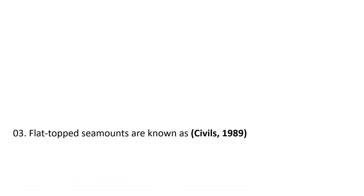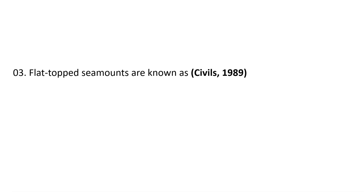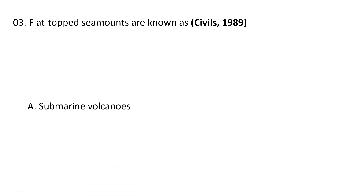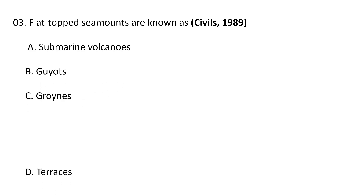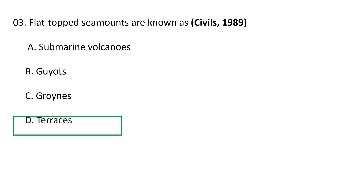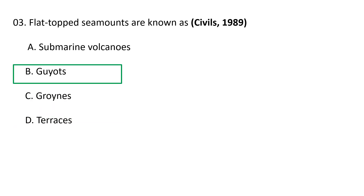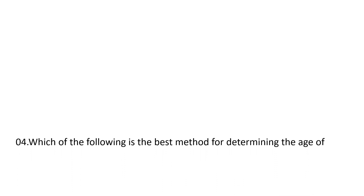Next question: Flat-topped sea mounts are known as — A) submarine volcanoes, B) guyots, C) groynes, and D) terraces. The correct answer is B, guyots. Groynes are shore protection structures built perpendicular to the shoreline, while terraces are a geomorphic feature. So the correct answer is guyots.